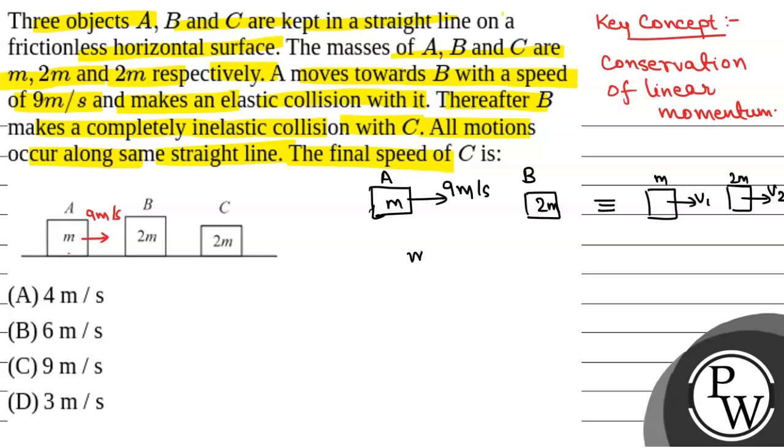So, initial momentum, that will be M into 9 plus 2M into 0. That will be equal to final momentum. That is M into V1 plus 2M into V2. So, here we have V1 plus 2V2 is equal to 9.